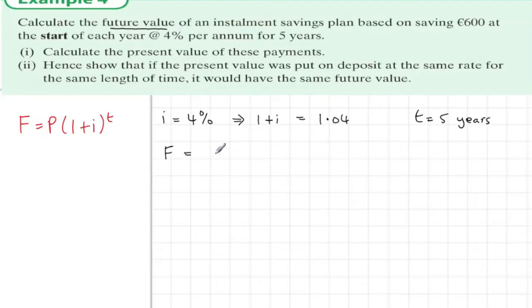In this installment savings, what we're doing is the first year 600 has been in the bank earning interest for 5 years, and the next 600 has been earning interest for 4 years, right down to the last 600 has been earning interest just for 1 year.